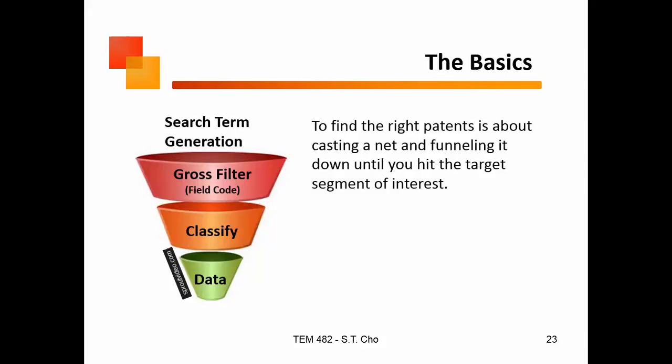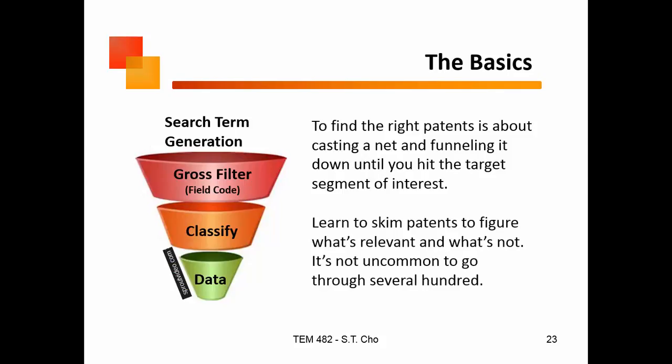Last time we were talking about how you go about doing a patent search. It's pretty much a funnel — you start out with a bunch of gross terms, then you classify and try to find a product class, because that tells you all the products actually filed in a certain area. Then you can distill out the data you want. One of the big skills to really learn is how to skim patents quickly — you can start looking at a patent within about 30 seconds.